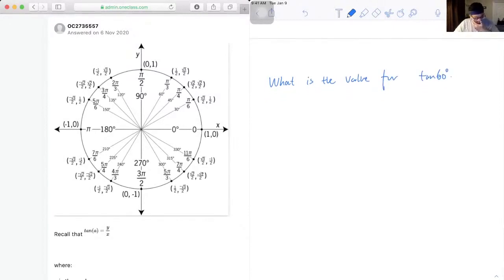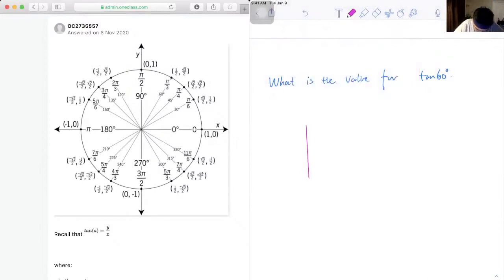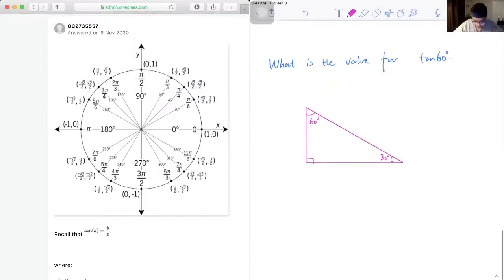Okay, since it's asking for tangent 60, and we know 60 is a special angle, we can create a special triangle with one of its interior angle being 60 degrees. So that's 60, and that's a right triangle, so the other angle would be 30. And let's call this ABC.